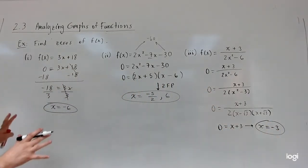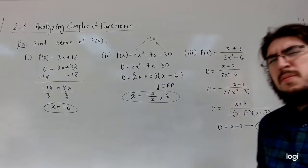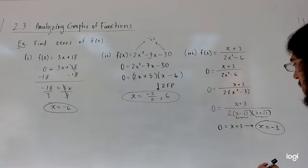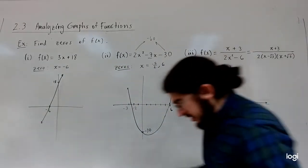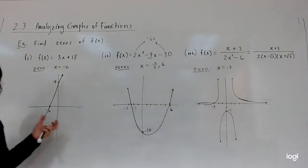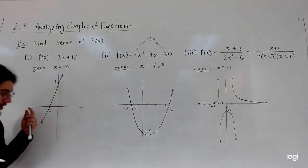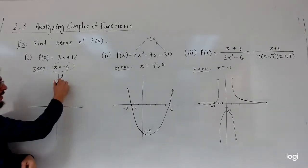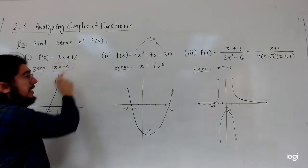So I've graphed each of these functions. The first one is a line, the second is a parabola, and the third is some different-looking curve we haven't seen before. Looking at the zeros: for the line, the x-intercept is negative 6, which matches our zero. The y-intercept is 18 — y-intercepts are easy to find because they're just f of 0. It's a line because it's linear, so just find the zero and the y-intercept and connect them with a line.